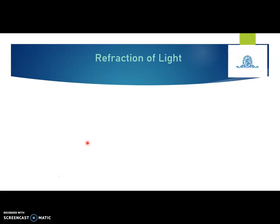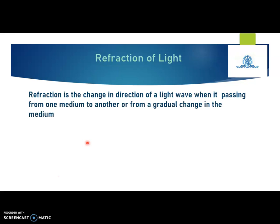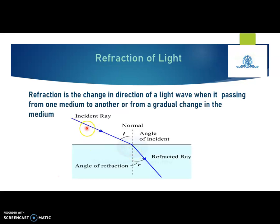Now let us see what is meant by refraction of light. Suppose light is travelling from one medium to another — for example, the upper medium is air and the lower medium is water or glass. When a ray of light travels from one medium to another, such as air to glass, there is a change in the direction of the ray of light, and this phenomenon is known as refraction of light.